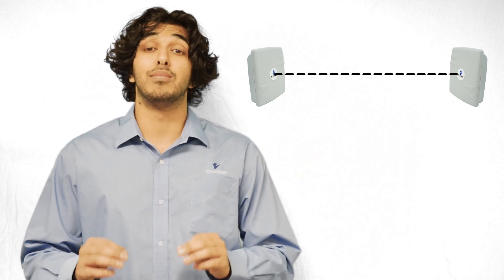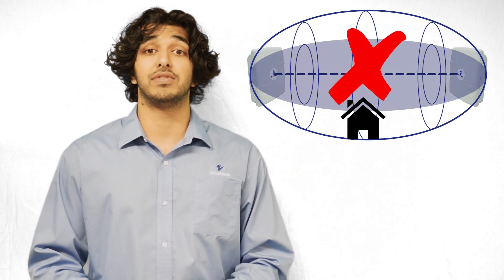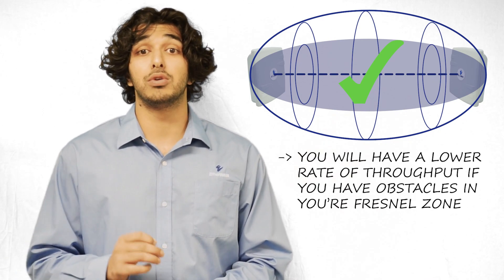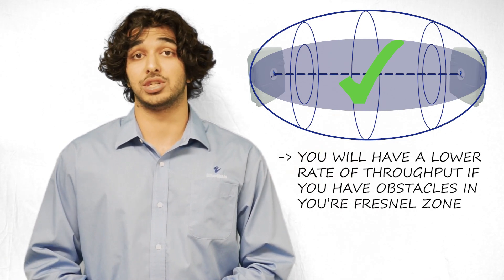Therefore, you must have more than a visual line of sight. You need for the Fresnel Zone to be clear, or the obstructions will block part of your throughput. You will have a lower rate of throughput if there is an obstruction in this zone.